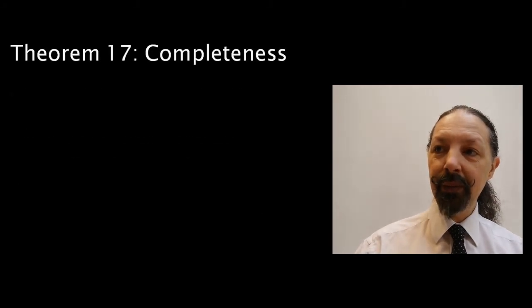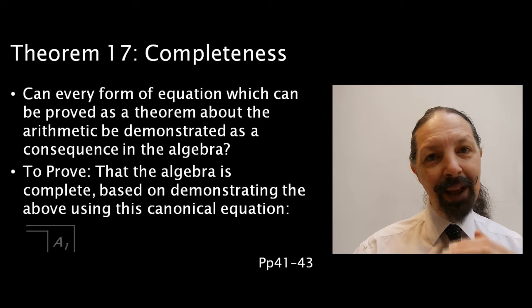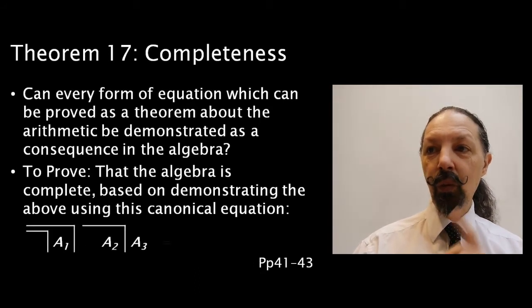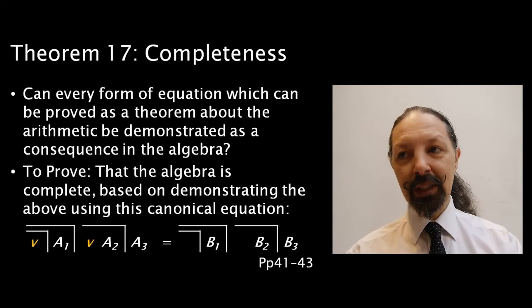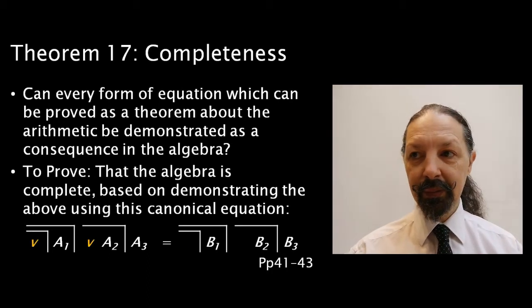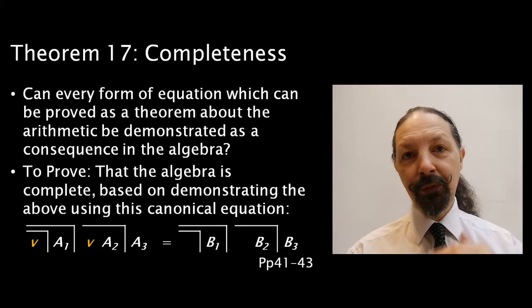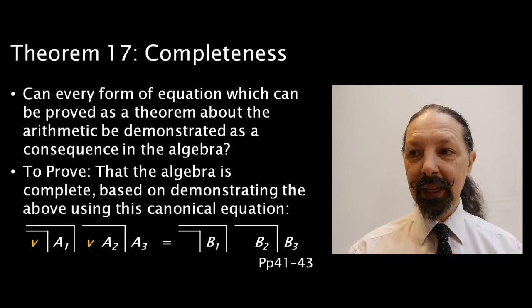So he asks, can every form of equation which can be proved as a theorem about the arithmetic be demonstrated as a consequence in the algebra? If we can do this, then the algebra is complete.